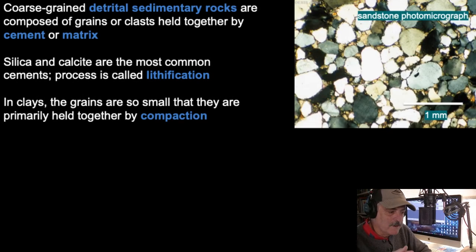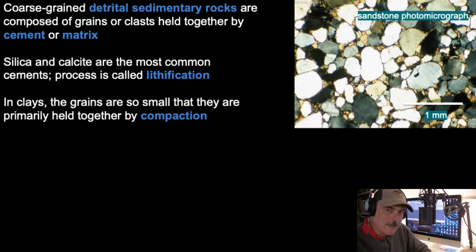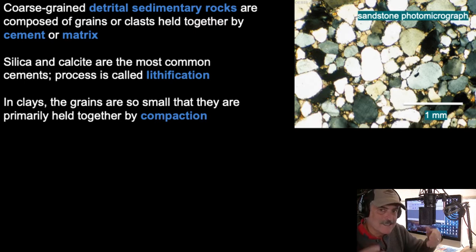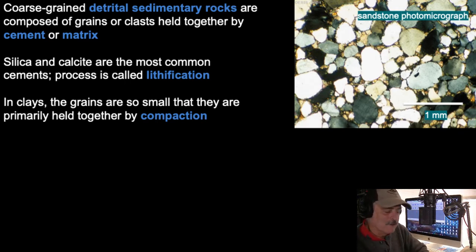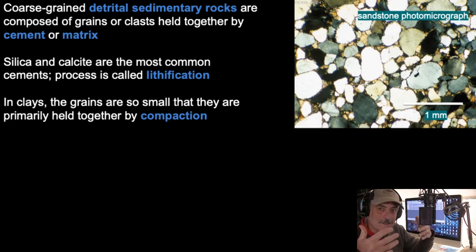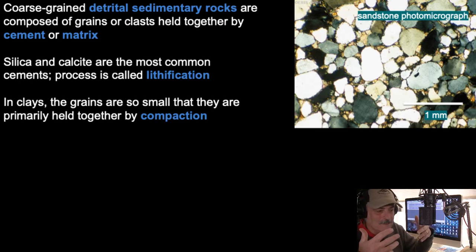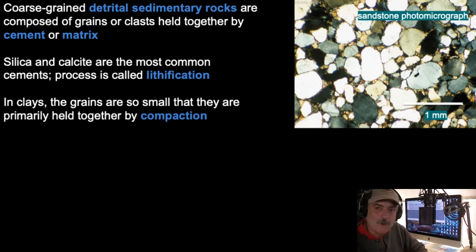So if we have these three different kinds of sedimentary rocks — the organic, the chemical, and the detrital — what turns them from sediments into rocks? That is the idea of cement. Silica could come in and bind sand grains together to give us a quartz sandstone. Or in the case of a graywacke — a muddy sandstone — you could have mud get in there as well, and it forms a matrix.